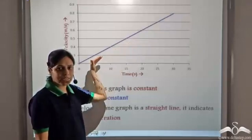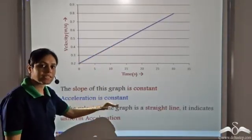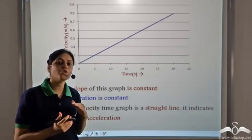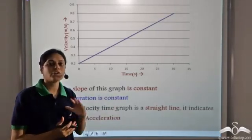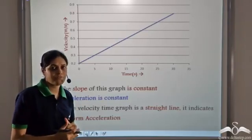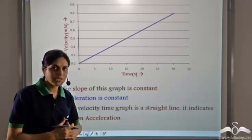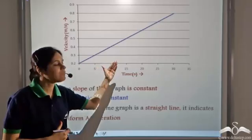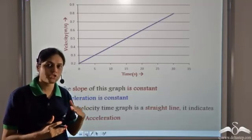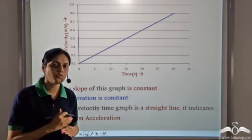Since this is a straight line graph, the slope is constant. Since the slope gives us acceleration, we can say the acceleration is constant. So if the velocity-time graph is a straight line, it indicates uniform acceleration. Just by having a glance at the graph, we can say that the body is moving with uniform acceleration — this is the benefit of using graphs. If the velocity-time graph of an object is a straight line, we can infer that it moves with uniform acceleration.